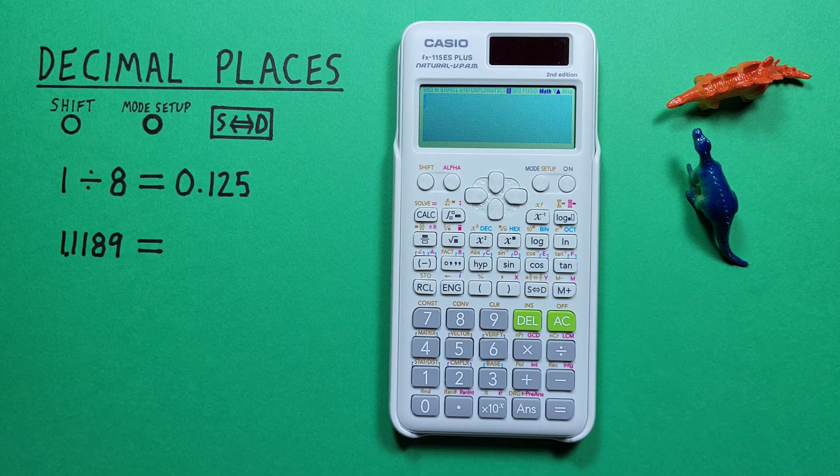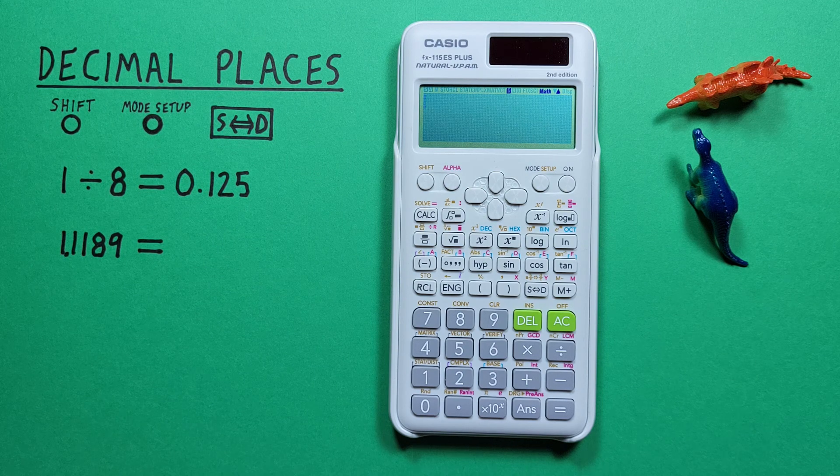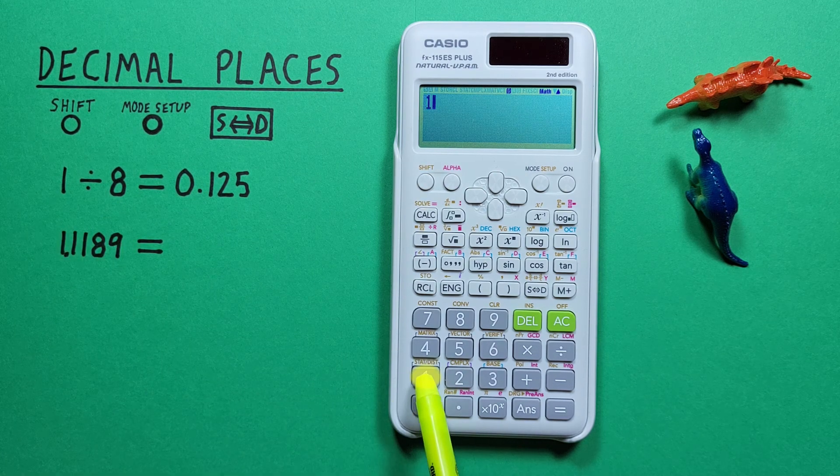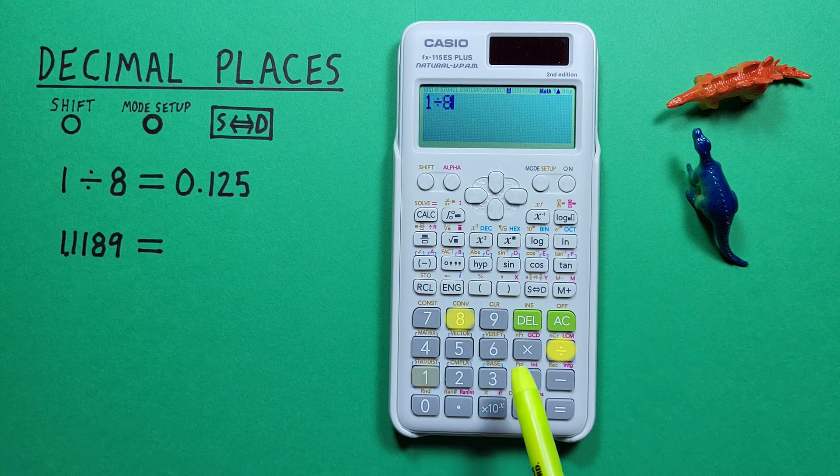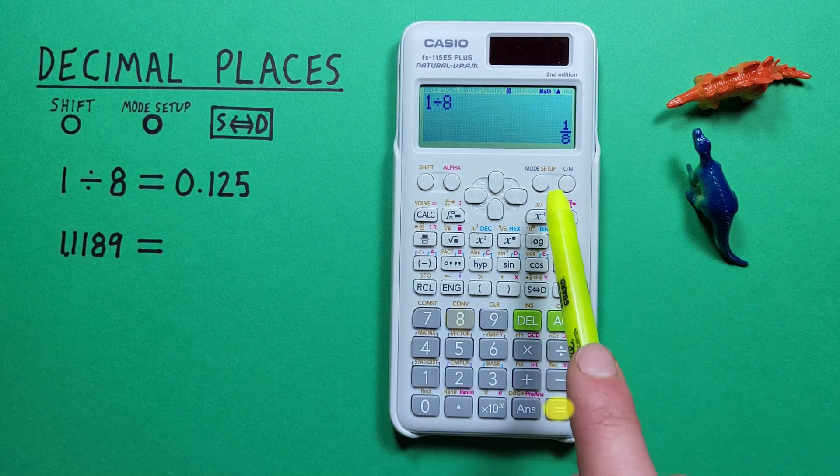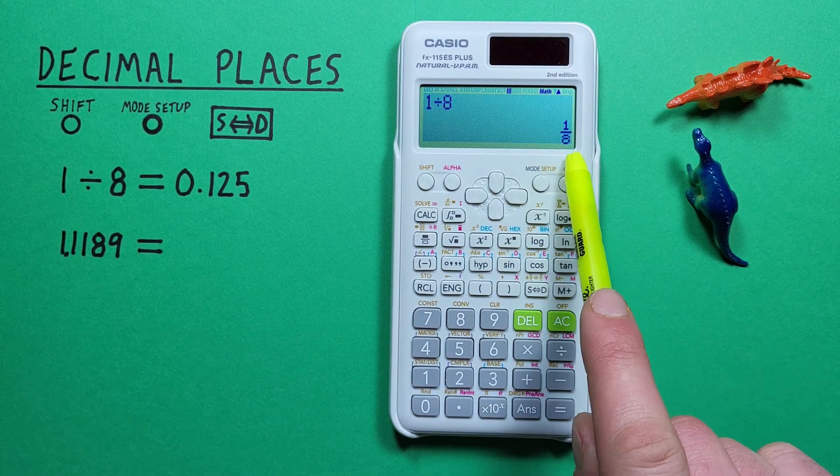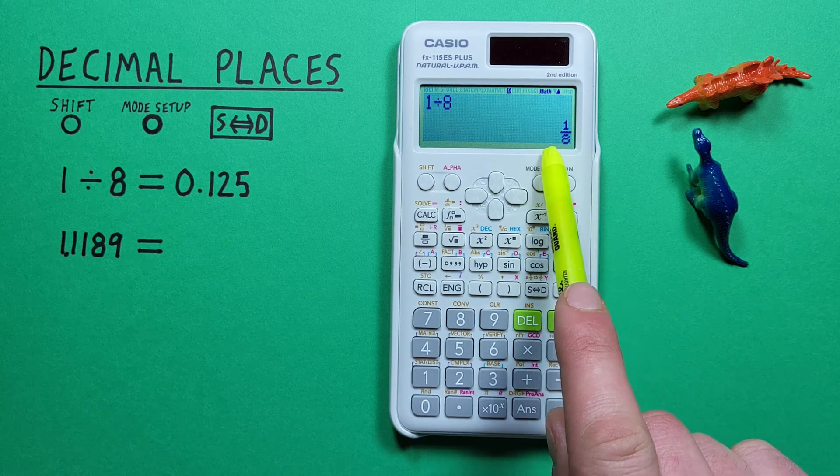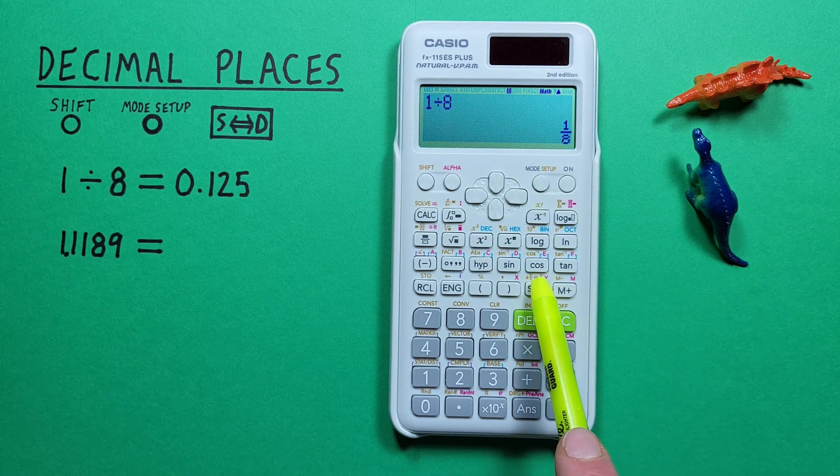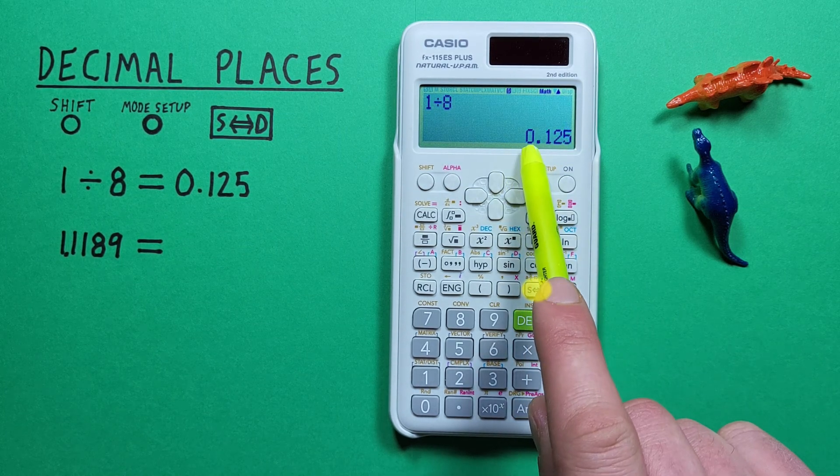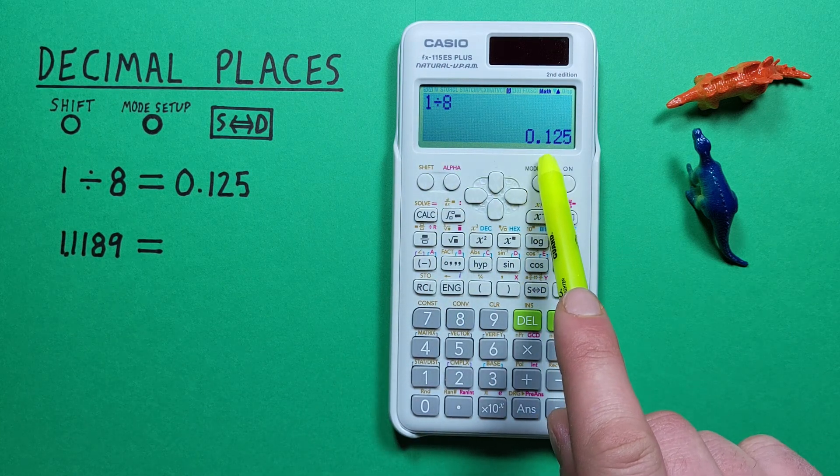Now when this calculator is in normal mode and we do something like 1 divided by 8 and press equals, it'll give us a fraction as a result. And if we want to convert this to decimals we can press the STD key. There we go. 1 divided by 8 is equal to 0.125.